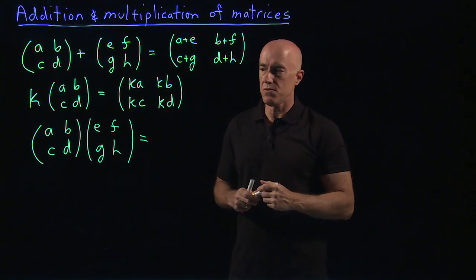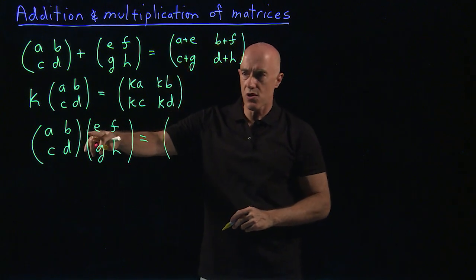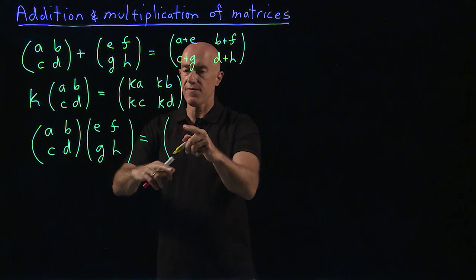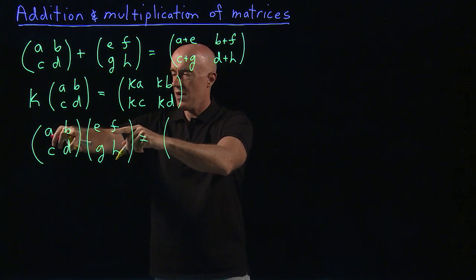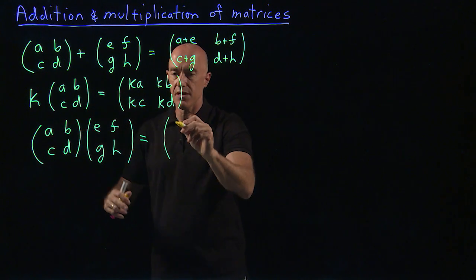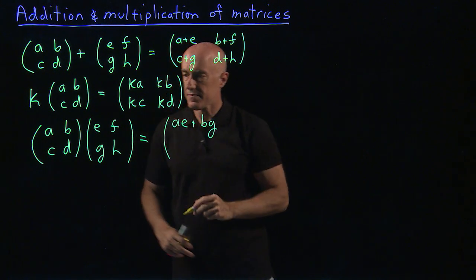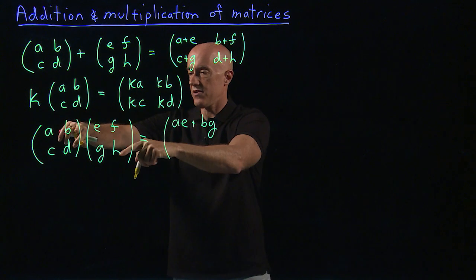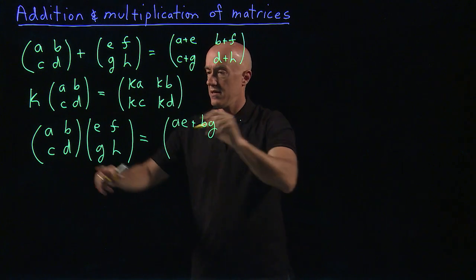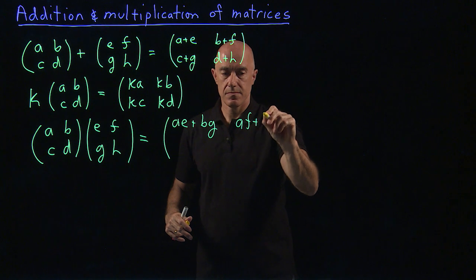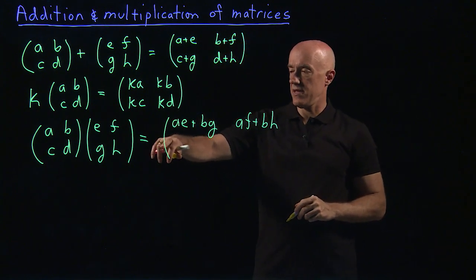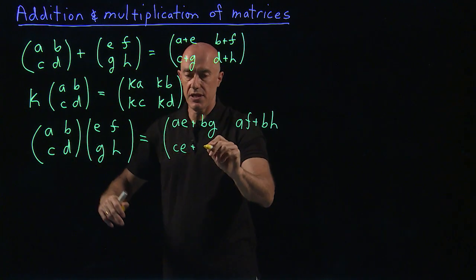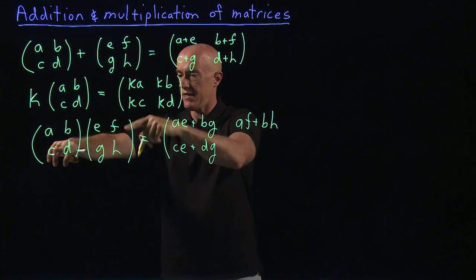You go across the rows of the first matrix and down the columns of the second matrix. So the first element would be across the first row of the first matrix, down the first column of the second matrix: A·E + B·G. The element in the first row, second column would be A·F + B·H. Then C·E + D·G, and finally C·F + D·H.